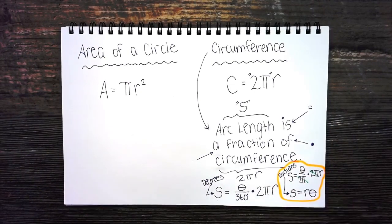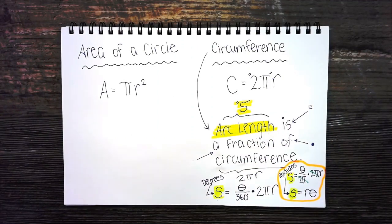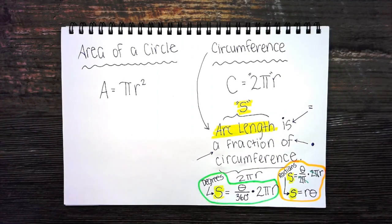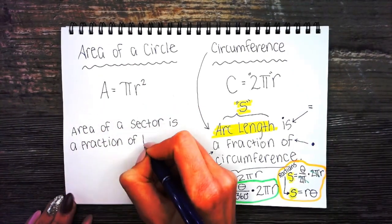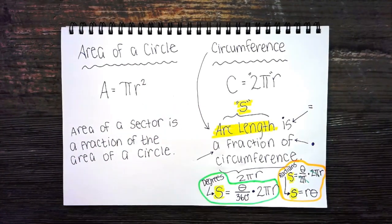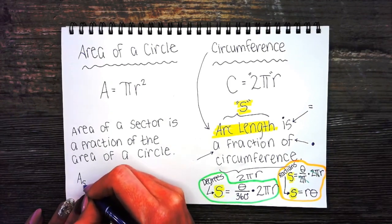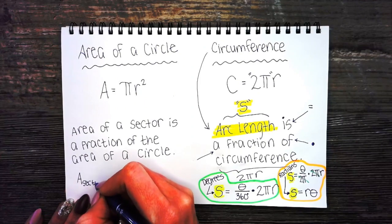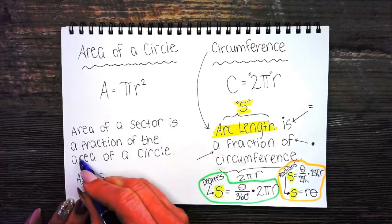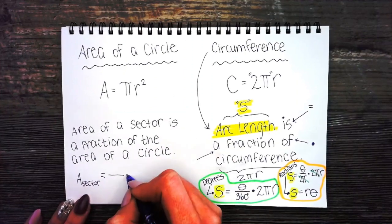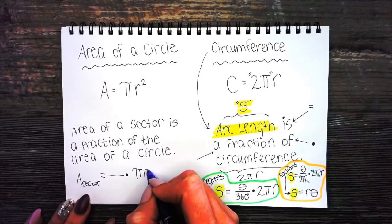Similar to finding arc length, we also found area of the sector in geometry. Area of a sector is a fraction of the area of a circle. Area sub sector is a fraction of the area of a circle pi r squared.